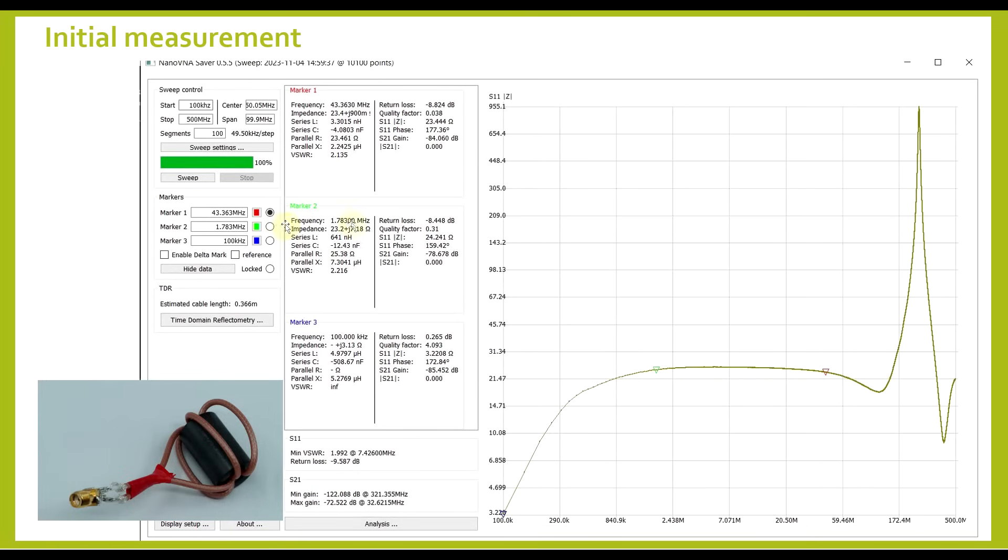When looking at the measurement result, we can see that this transformer does indeed present a more or less stable 25 ohm impedance on the measurement side at relatively low frequencies. So these two markers are placed at 1.78 MHz and at 43 MHz. At low frequency we see this drop-off, caused by the limited inductance of the transformer, and at high frequency we see a small drop in impedance, then a massive jump, and then another drop and so on.